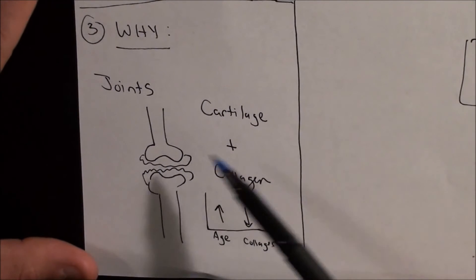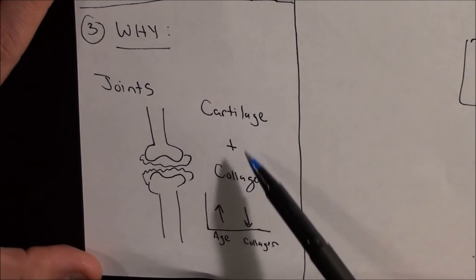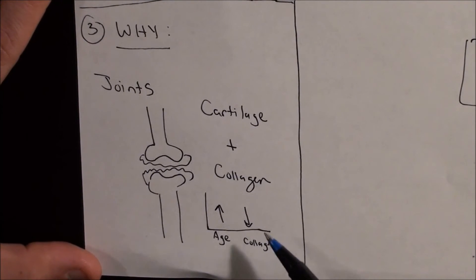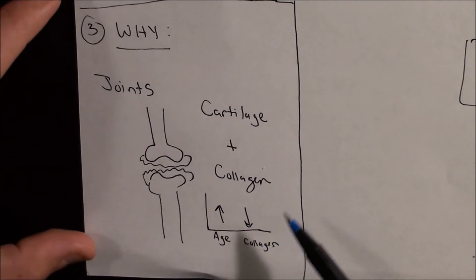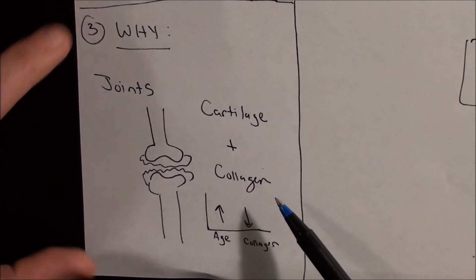Joints. And in particular, joints are protected by cartilage and collagen. And as you age, the amount of collagen that your body produces naturally decreases. Having these two substances is super important for having strong, healthy joints.